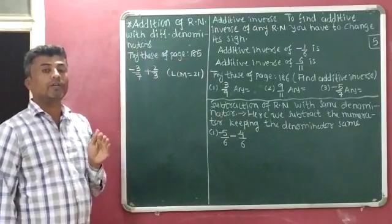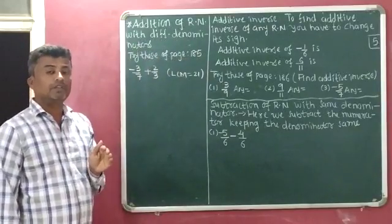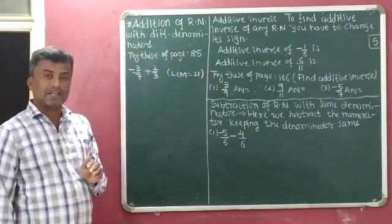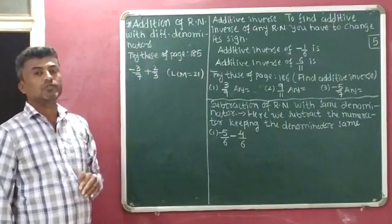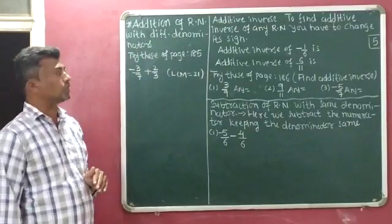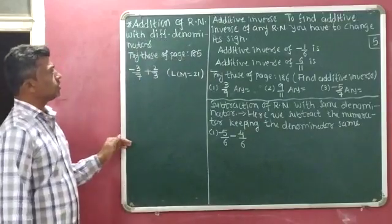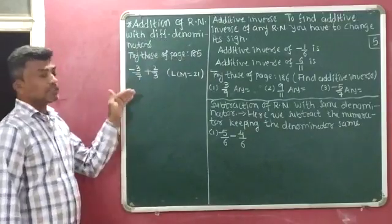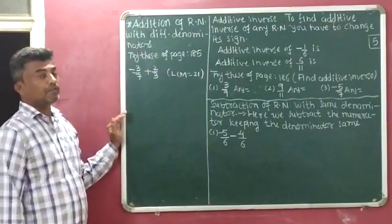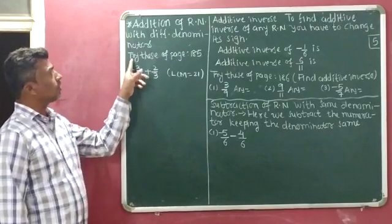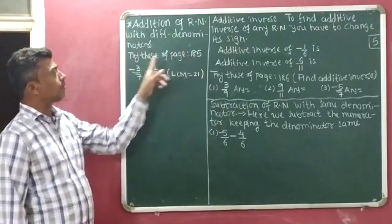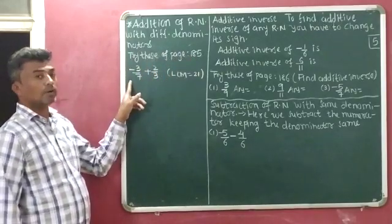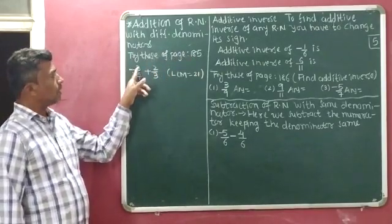For addition of rational numbers with different denominators, we make the denominator the same with the help of the LCM method and then we can solve the question. I will explain this with the help of try these on page 185, question number 1.